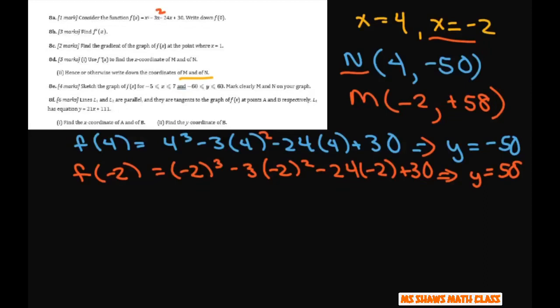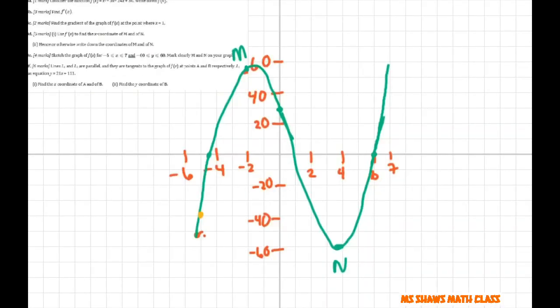So these are your points there, your minimum and maximum. We're going to sketch it and clearly mark our m and n on the graphs. So I already did that. So negative 2 went up to 58. So let's write that negative 2, 58. That is your m value.